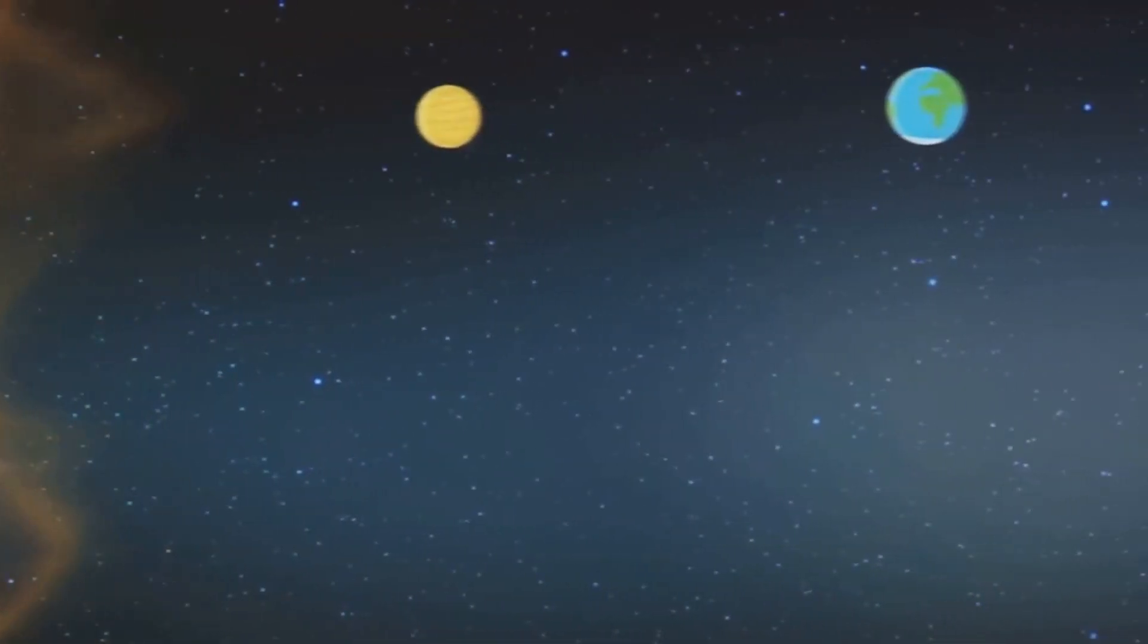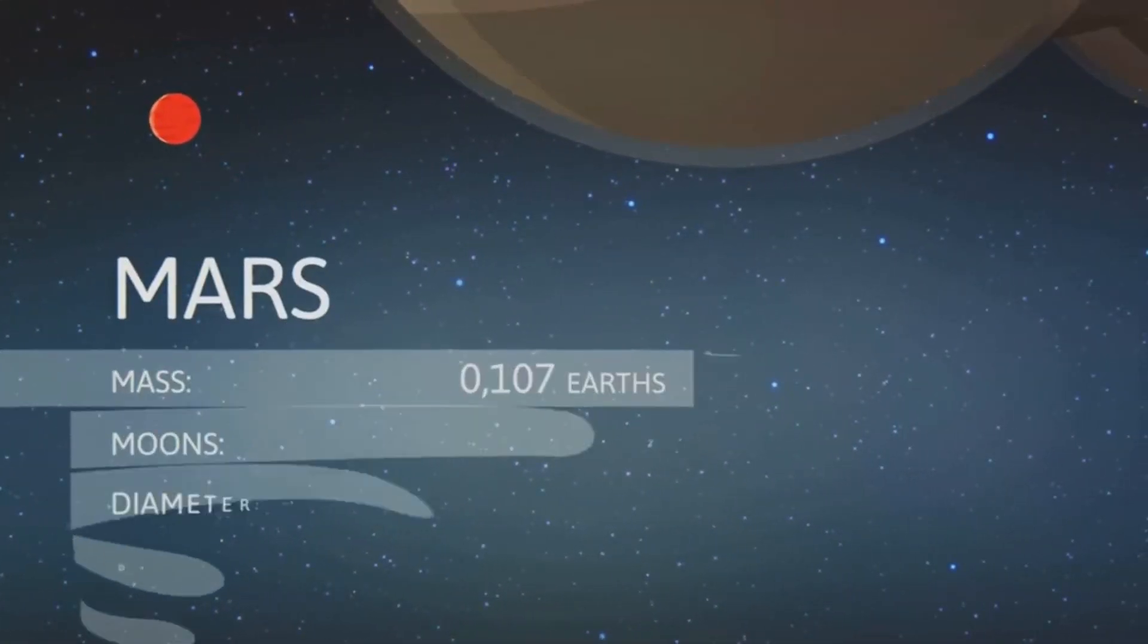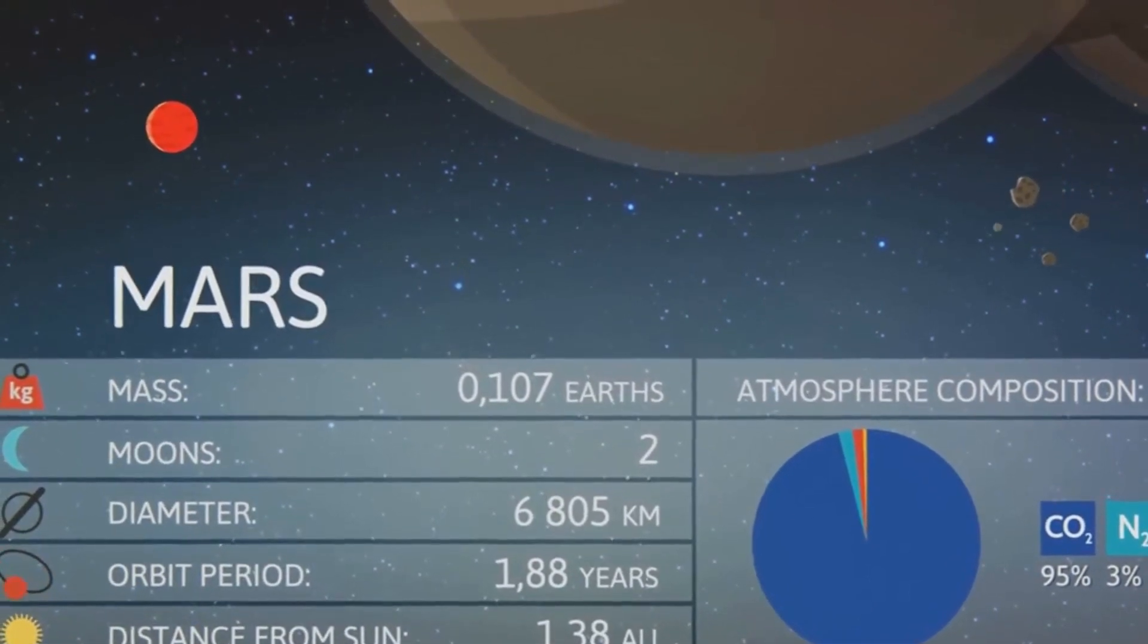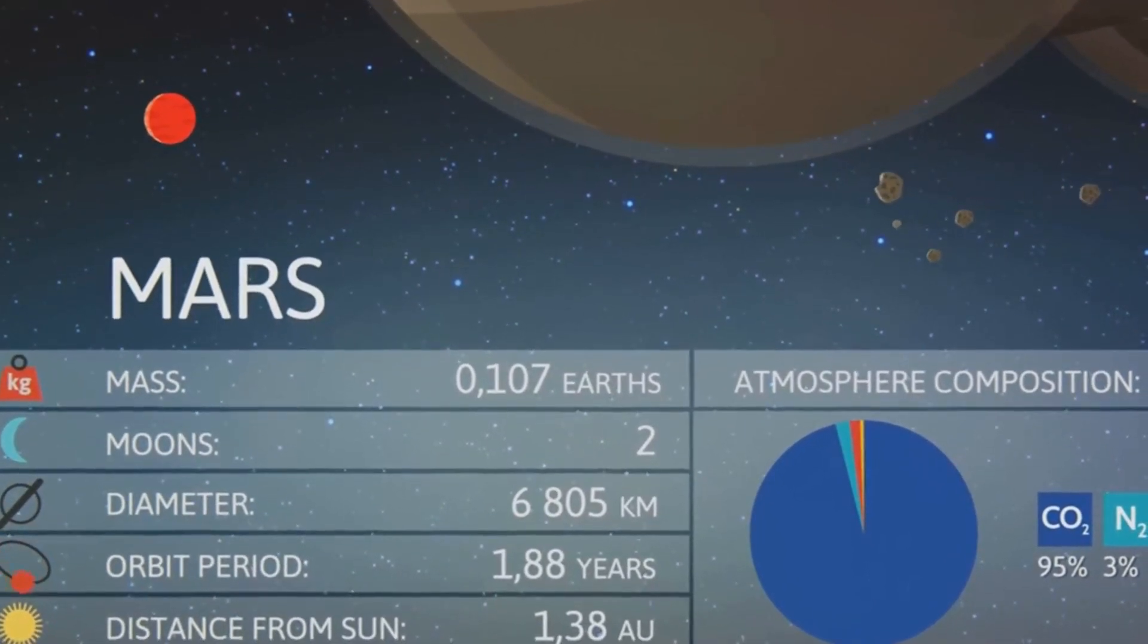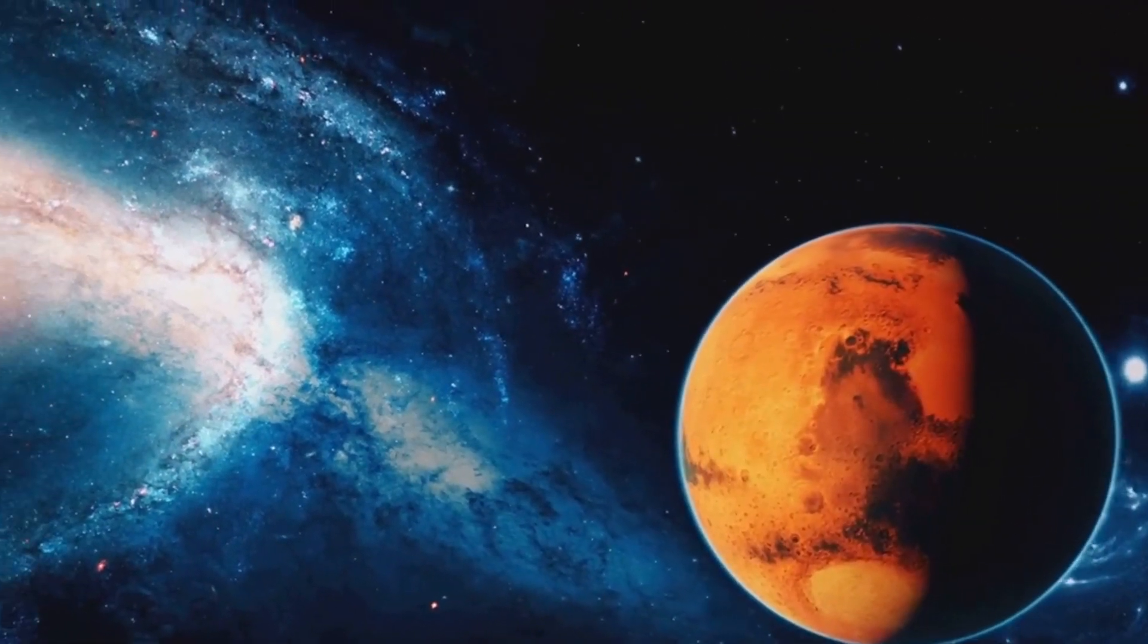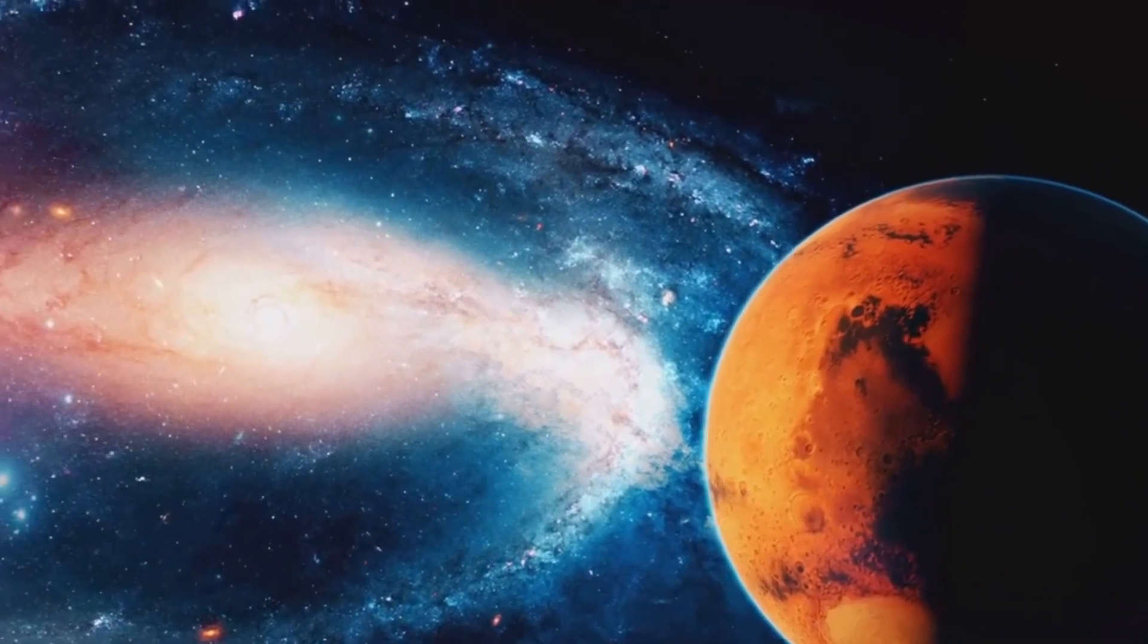On the other hand, Mars cooled more rapidly due to its smaller size. As it cooled, its geological activity decreased, leading to the cessation of processes like plate tectonics and volcanic activity. This lack of activity contributed to the loss of its magnetic field, which in turn led to the stripping away of its atmosphere by solar wind over billions of years.